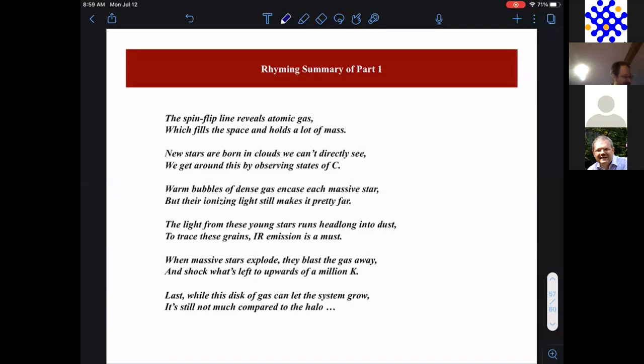The spin flip line reveals atomic gas, which fills the space and holds a lot of mass. New stars are born in clouds we can't directly see. We get around this by observing states of C. Warm bubbles of dense gas encase each massive star, but their ionizing light still makes it pretty far.